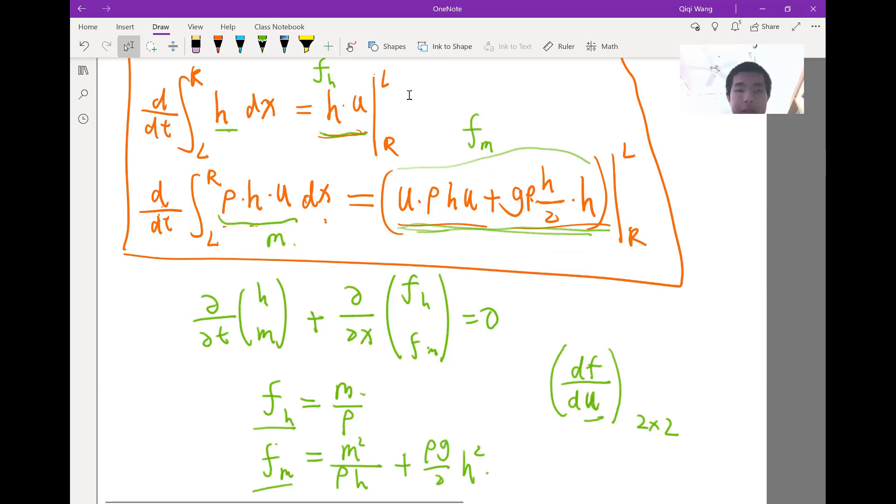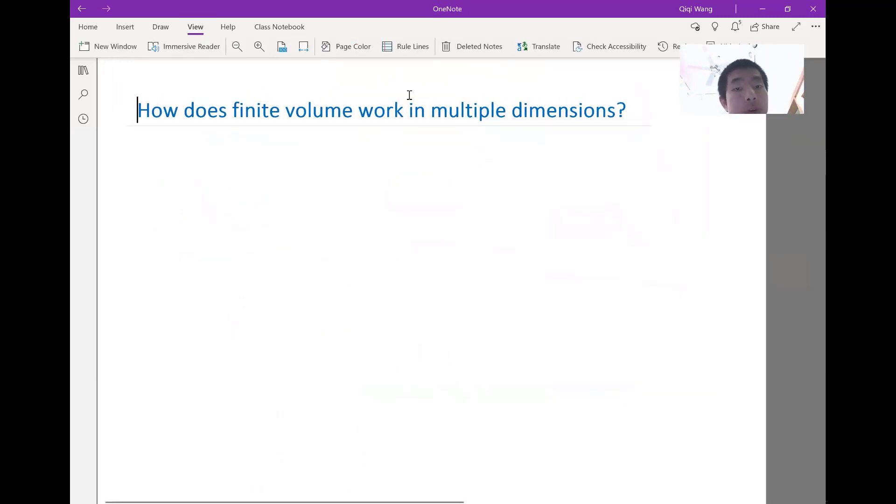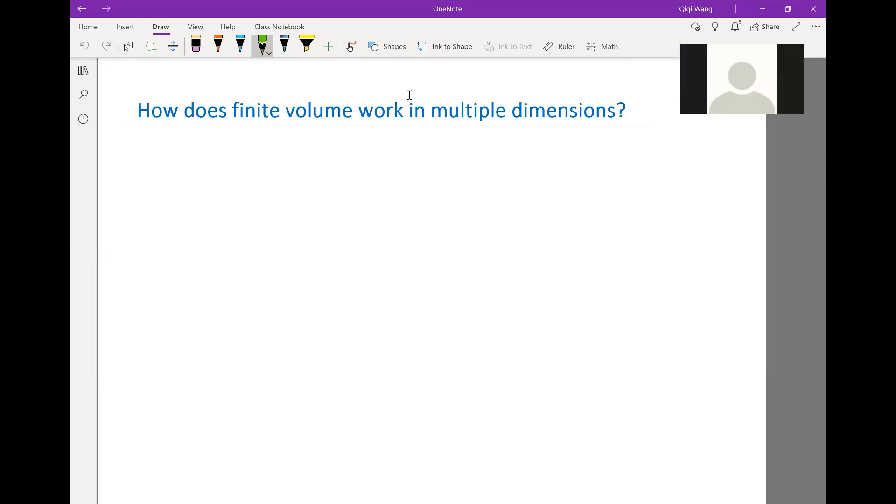I'm just spending the last few minutes to introduce to you how does finite volume work in multiple dimensions. We have been looking at a single spatial dimension only in x, right? And finite volume actually extends to multiple dimensions extremely easily, in the sense that if we have a two-dimensional conservation law...